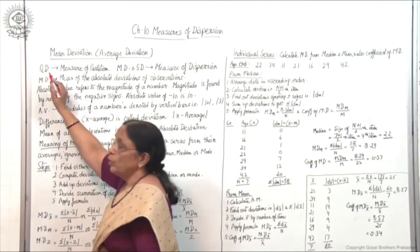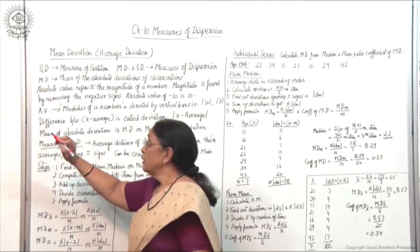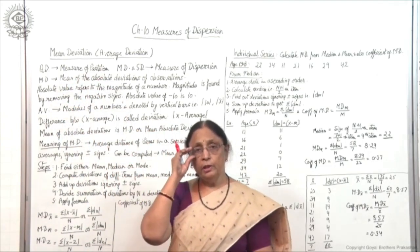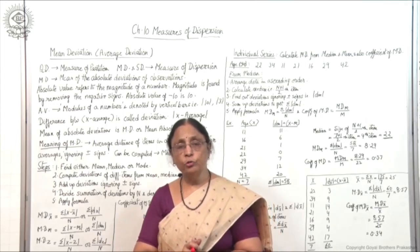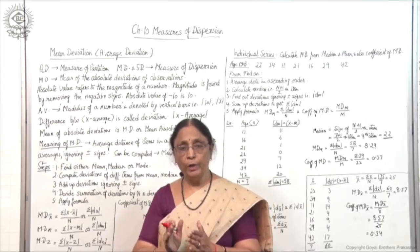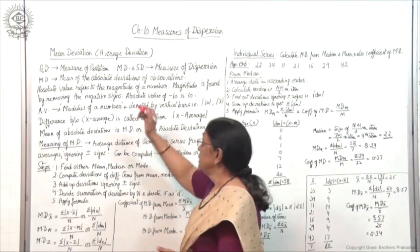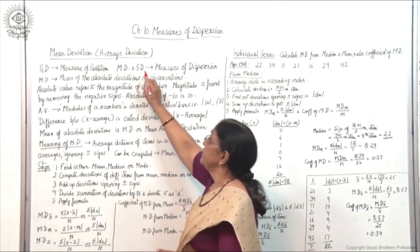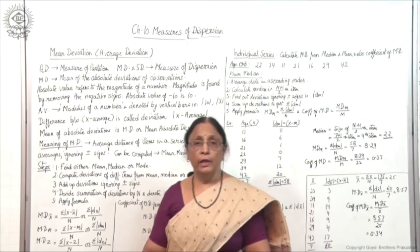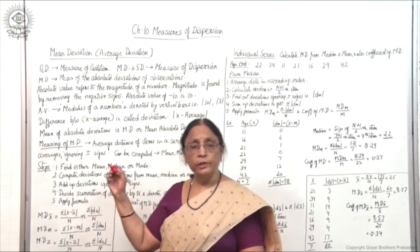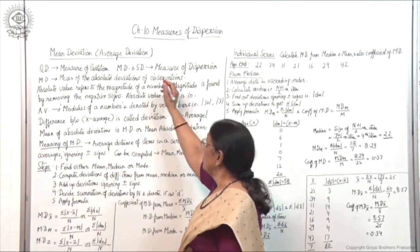Earlier you studied quartile deviation. Quartile deviation is a measure of partition — you were dividing the series into four parts, so that was giving you partition values. Whereas mean deviation and standard deviation are the actual measures of dispersion; they are not partition measures. So these are considered a better measure of dispersion.